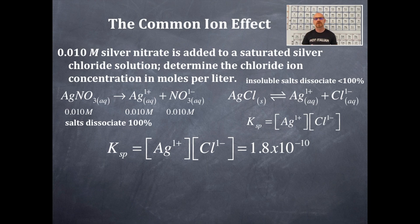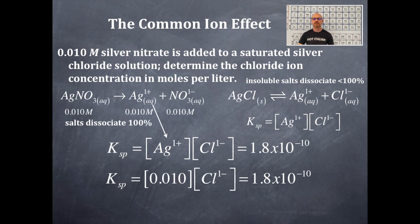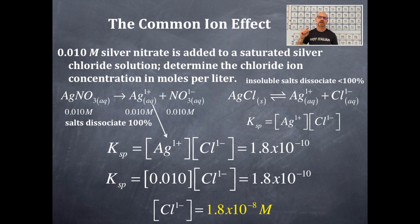The problem asks for the chloride ion concentration. We already have the silver ion concentration — 0.010 molar — from the salt dissociation. We plug that into the Ksp expression: 1.8 × 10⁻¹⁰ = (0.010)[Cl⁻]. Dividing both sides by 0.010, the chloride ion concentration equals 1.8 × 10⁻⁸ molar. That's your answer.